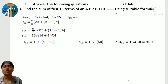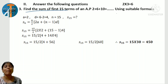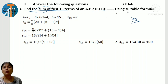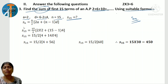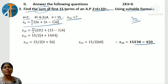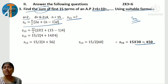For the 2-mark section, 3 questions are given. The first question: find the sum of the first 15 terms using a suitable formula for 2 + 6 + 10... Write the first term, common difference, and n = 15. The formula is: Sn = n/2 × [2a + (n−1)d]. After substituting and simplifying, the final answer is 450. These are definite questions that are easy to score.